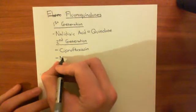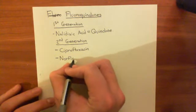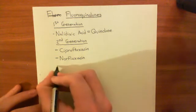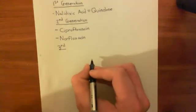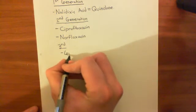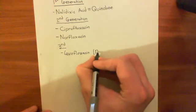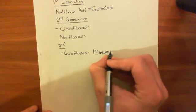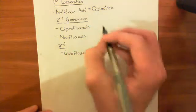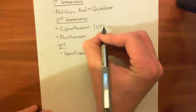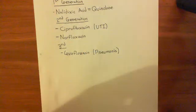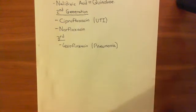Another second generation fluoroquinolone is norfloxacin. Moving to the third generation, there is levofloxacin, which is often used to treat community-acquired pneumonia. Levofloxacin is slightly better at killing gram-positive bacteria than ciprofloxacin. Urinary tract infections are generally caused by E. coli, a gram-negative bacterium, whereas pneumonia is generally caused by Streptococcus pneumoniae, a gram-positive bacterium, against which levofloxacin is slightly more effective.